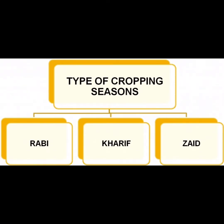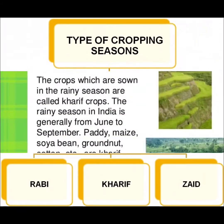First we will discuss about types of cropping season. There are three types of cropping season: Rabi, Kharif and Zaid. In this video, we will discuss about the Rabi and Kharif.